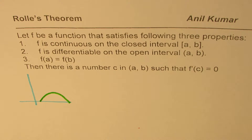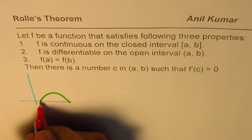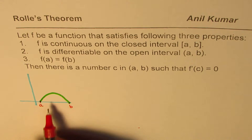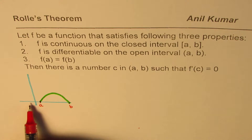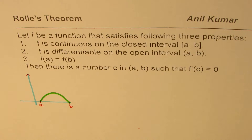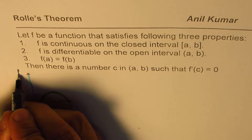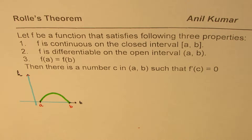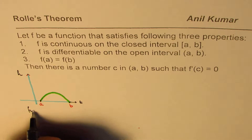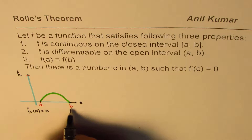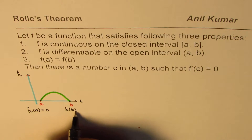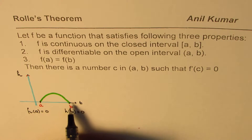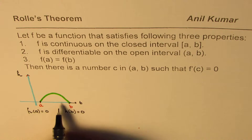That's the trajectory which the ball is going to follow. Let us consider that this point is A and this point is B where the ball lands. What you notice is that the height of the ball — let's call this height h and this is time t — so the height of the ball at A is 0, h(a) = 0, and the height of the ball at B is also 0. The path followed by the ball is continuous.